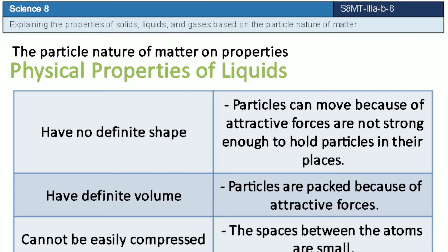Let us now discuss how these properties are explained by the particle nature of matter. First, liquids have no definite shape but have definite volume, because the attractive forces holding the particles together are strong enough to hold them together, although not strong enough to hold the particles fixed in their places. Second, liquids cannot be easily compressed because the spaces between the particles are small.